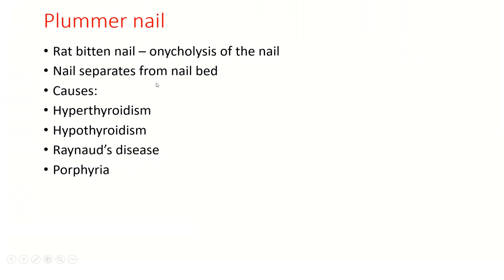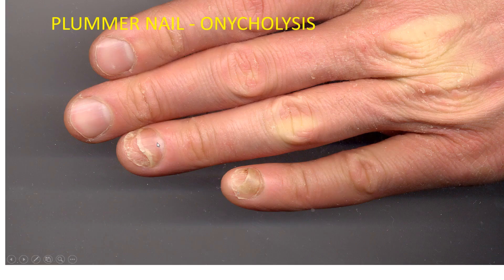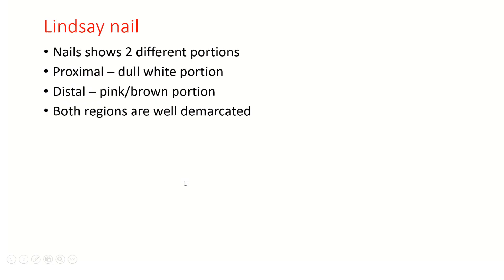The third condition is Plummer nail, where there is onycholysis of the nail — the nail separates from the nail bed. Causes include hyperthyroidism, hypothyroidism, Raynaud's disease, and porphyria. You can see this is the nail separated from the nail bed, known as Plummer nail or onycholysis.